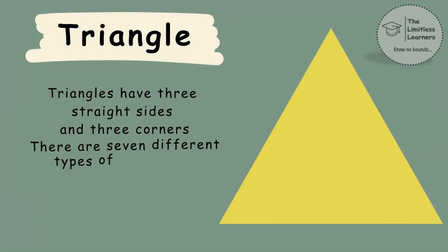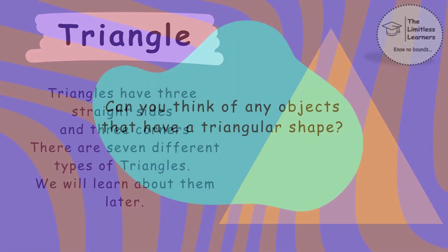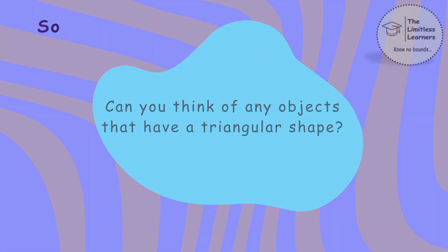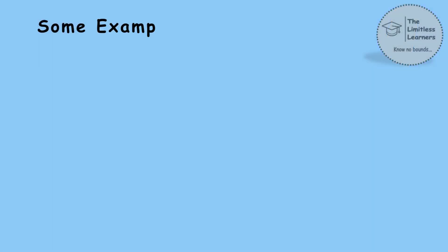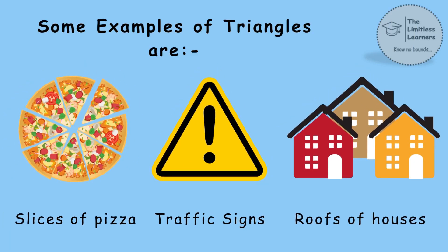Triangle. Triangles have three straight sides and three corners. There are seven different types of triangles — we will learn about them later. Can you think of any objects that have a triangular shape? Some examples of triangles are slices of pizza, traffic signs and roofs of houses.